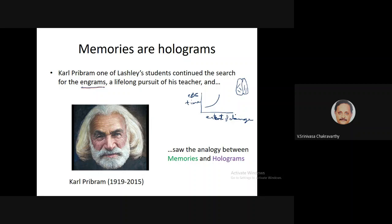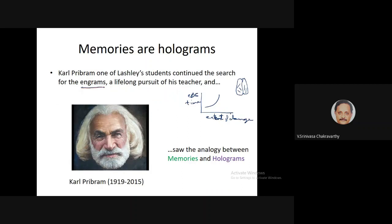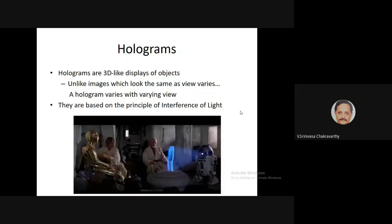Karl Pribram was not satisfied with that conclusion — it says memory is distributed, but doesn't tell you mathematically how memory is distributed in the brain. How can you have a memory distributed in a network? Pribram's son happened to be a physicist, and one day his son was very excited, talking about a new development in physics called holograms, which you can construct using lasers.